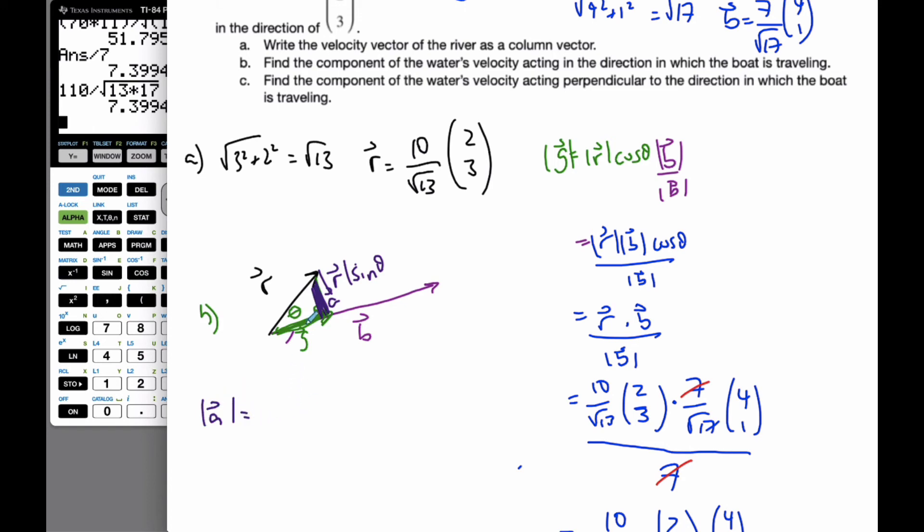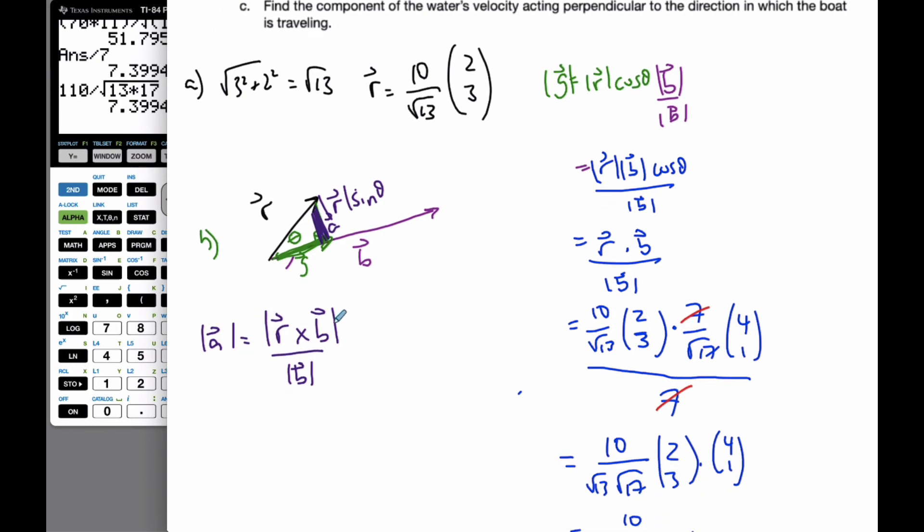It's going to be the cross product. It's going to be R cross B over the magnitude of B. And I also want the magnitude because I want it to be the length of that vector. And so now I have to actually do R cross B.